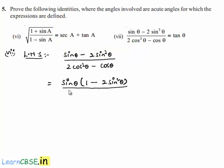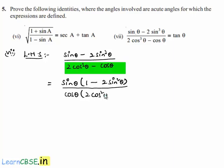In the denominator, let us take cos theta as common, then we get the denominator as cos theta into 2 cos squared theta minus 1.